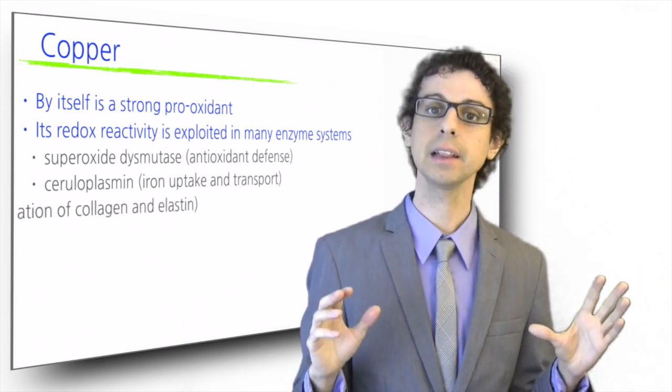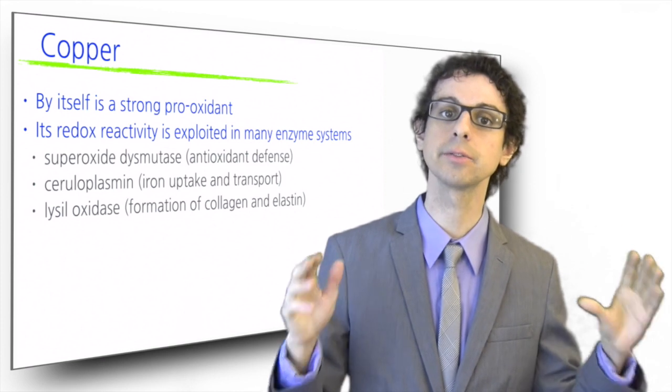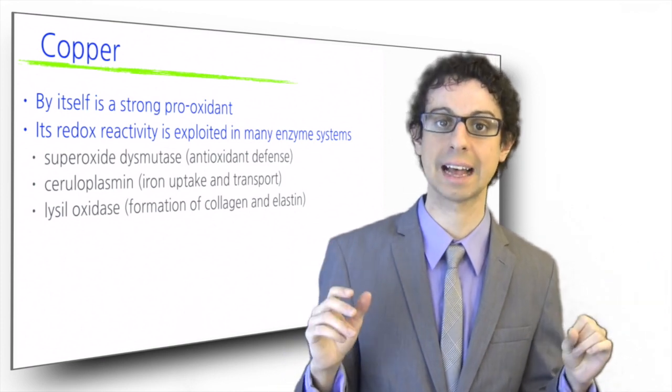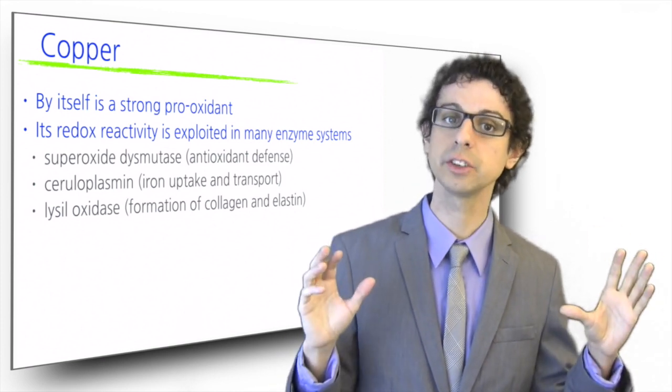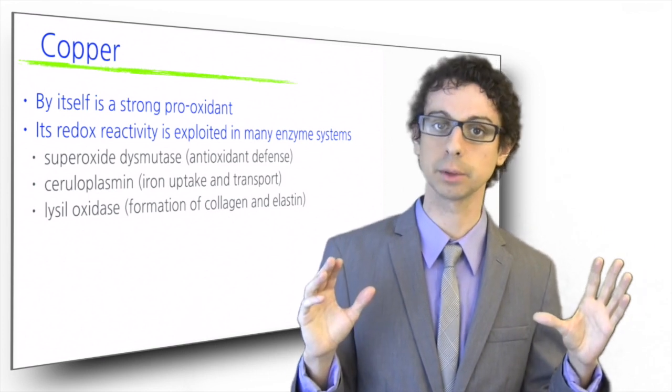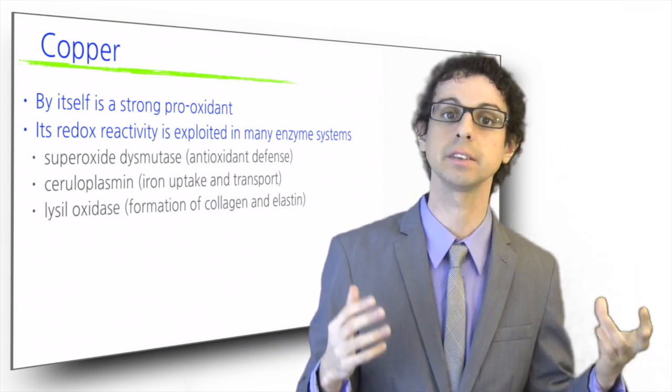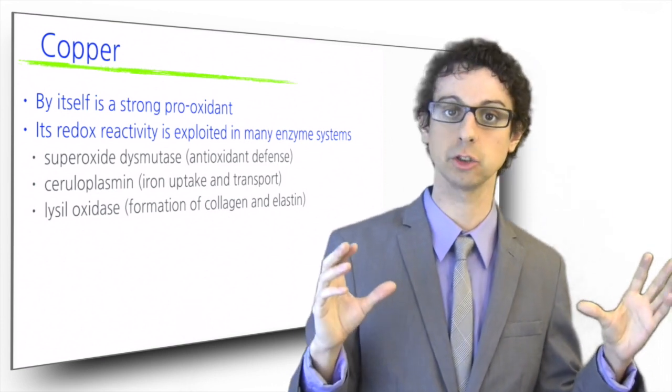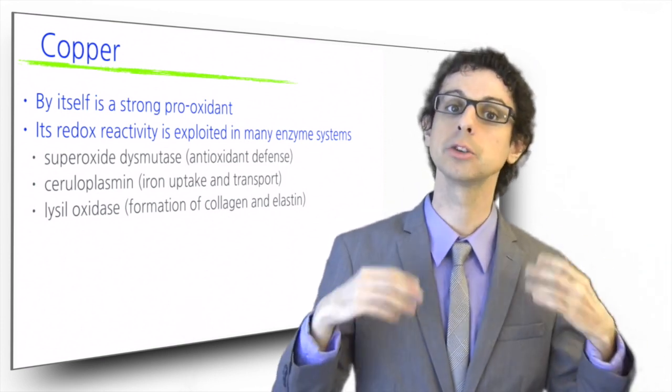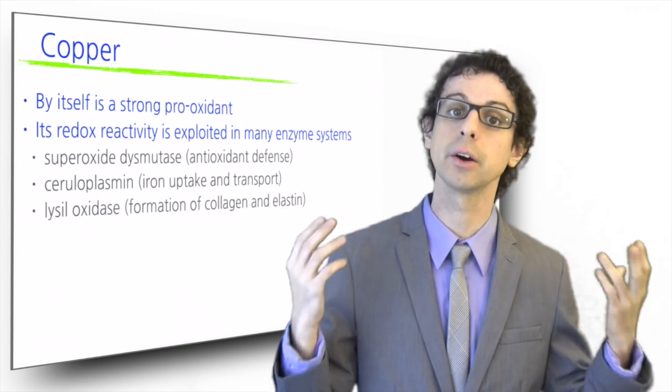As part of lysyl oxidase, copper is necessary for the formation of collagen and elastin. With copper deficiency, scurvy-like symptoms appear, and cardiovascular disease risk increases due to the weak connective tissue, which may lead, for example, to heart hypertrophy or aortic rupture.